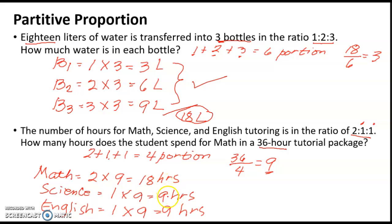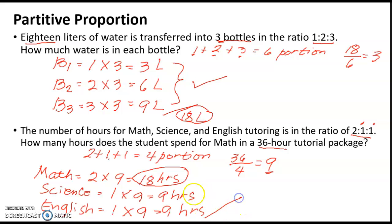What is asked is how many hours the student spends for math in a 36-hour tutorial package — the answer is 18 hours. To verify: 18 plus 9 plus 9 equals 36, which proves the answers are correct. That's how we solve partitive proportion. Thank you.